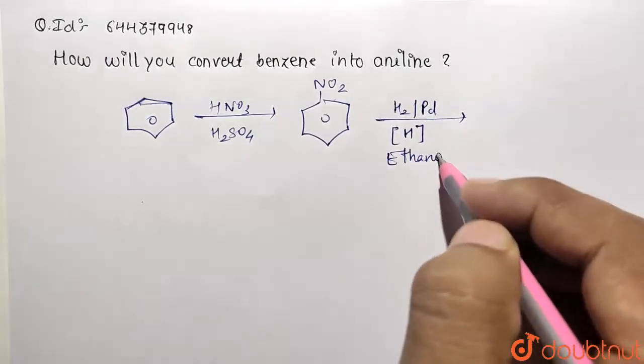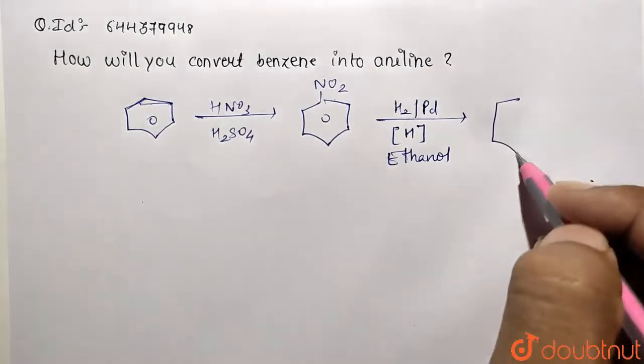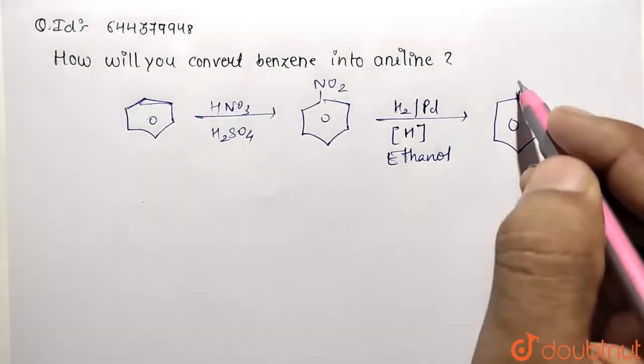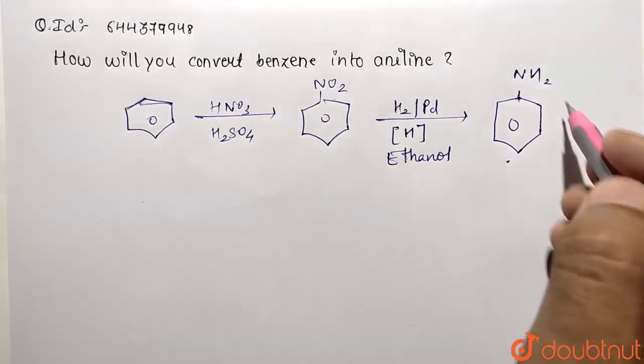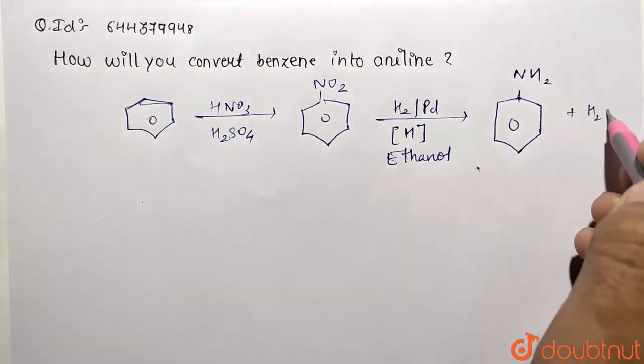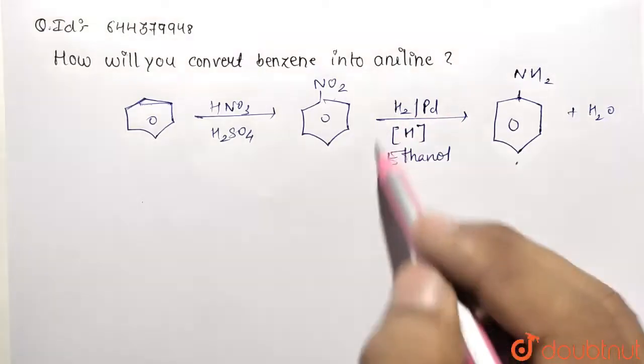So ethanol is being taken over here. So this reduction product is being converted to corresponding aniline molecule. So this is going to be our NH2 with the release of water molecule.